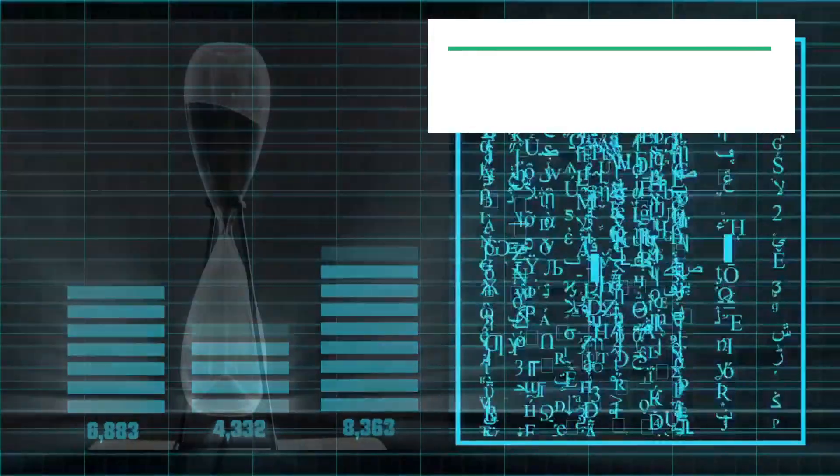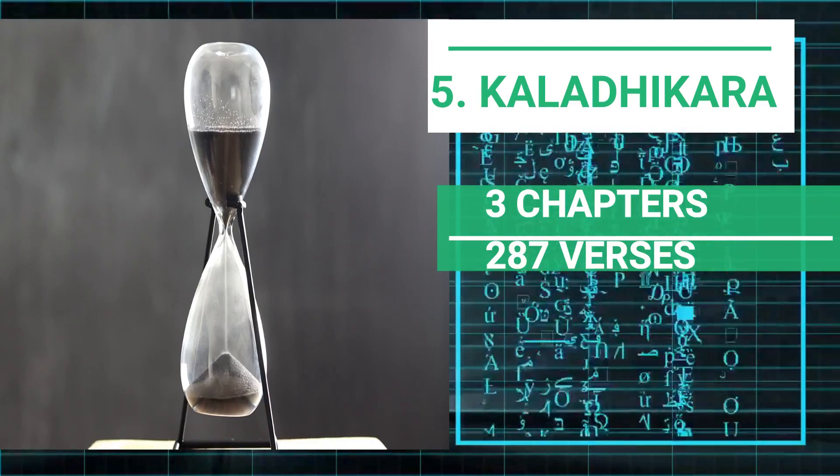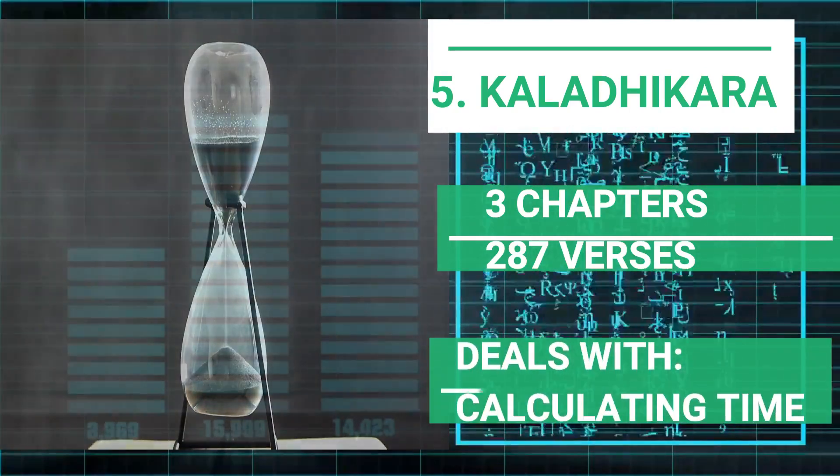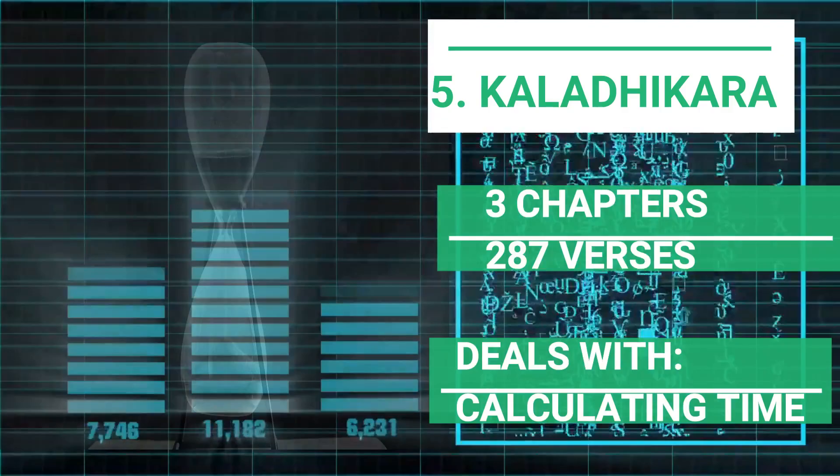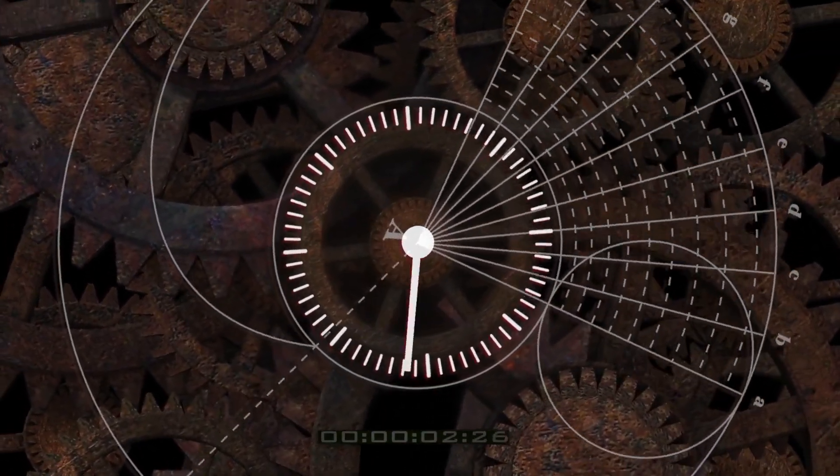Kaladhikara or the 5th section has 3 chapters with 287 verses or slokas and deals with the process of calculating time. Now let's move on a little deeper.